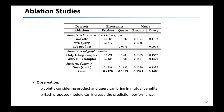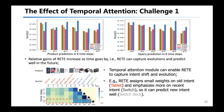We conduct ablation studies to analyze the effect of each proposed module. First, jointly considering product and query interaction history can bring in mutual benefits, and each proposed module increases prediction performance. We further show the distribution of performance on different time steps during the testing period. Our framework beats all baselines in all time steps, and as time goes by, our relative gains actually increase, indicating that the temporal attention module can better capture long-term user intents.